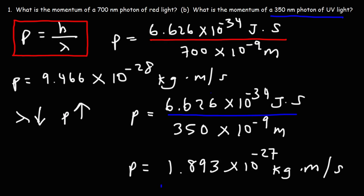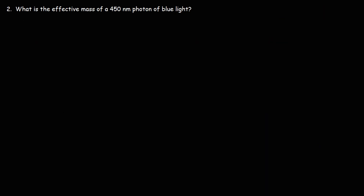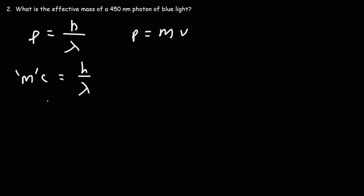So that's the momentum of the photon of UV light at 350 nanometers. Now let's try this problem: what is the effective mass of a 450 nanometer photon of blue light? We can use the momentum equation: p = h over lambda. Since momentum is mass times velocity, this becomes effective mass times the speed of light equals h over lambda. Dividing both sides by c, the effective mass is Planck's constant divided by the wavelength times the speed of light.